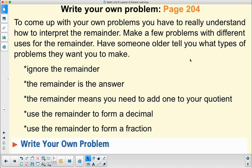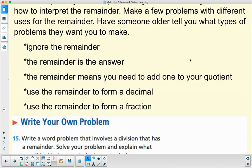Have someone older tell you what type of problems they want you to make. Remember, what you can do with the remainder is ignore the remainder. Puzzle Penguin couldn't ignore his remainder. He didn't have enough boxes. The remainder is his answer. Our remainder for our answer was like the players that were left over that didn't get to play volleyball. The remainder means you need to add one more to your quotient. That's what Puzzle Penguin had. His 20 sardine cans needed one more box. Use your remainder to form a decimal. That's a lot of times for money or metric measurements. And use the remainder to form a fraction. That's sometimes days, things that we can break into fractions like pieces of pizza. So go ahead and have some fun writing a bunch of your own problems.